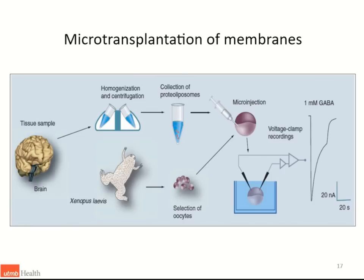We can have hundreds of Xenopus oocytes from a single frog. Once we inject the protoliposomes, they fuse with the membrane of the oocytes immediately — fusion starts about one hour after injection. About 18 to 24 hours later, we have a plateau of responses that is very stable, then the responses start to go down across different days.